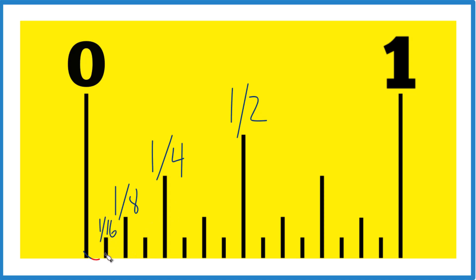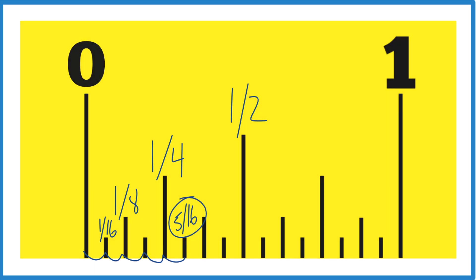We're looking for five sixteenths. So one, two, three, four, five — right there. That's our five sixteenths. That's how you do it. This is Dr. B finding five sixteenths on a tape measure. Thanks for watching.